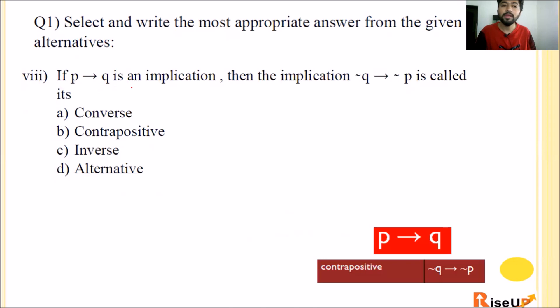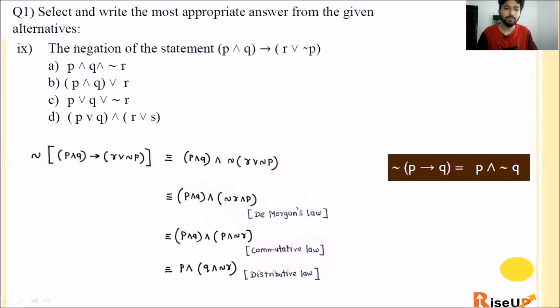Seventh one: A biconditional statement is the conjunction of two dash statements - negative, compound, connective, conditional. P double implication Q is P implication Q and Q implication P. Implication is also called conditional. So a biconditional is the conjunction of two conditional statements. So D is the correct option.